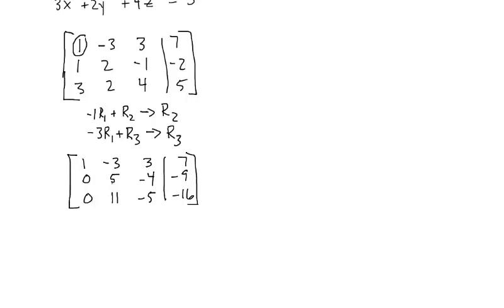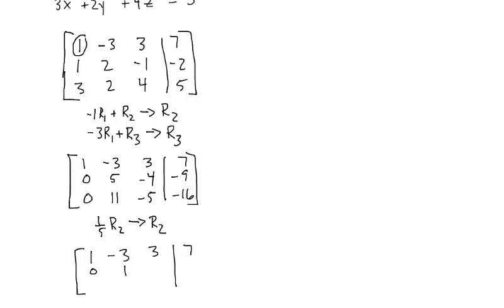The next step is to get a 1 where the 5 is, because we want 1s down the diagonal and 0s everywhere else. To get a 1 where this 5 is, we do 1/5 times row 2 and put it back in row 2. Row 1 doesn't change. Then we get 0 divided by 5 is 0, 5 divided by 5 is 1, negative 4 divided by 5 is negative 4/5, and negative 9 divided by 5 is negative 9/5. The third row doesn't change.